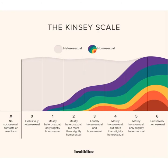The scale fails to demonstrate sexual fluidity and address sexual identities, as a homosexual man can still be sexually attracted to both genders. It also fails to give bisexuality its own orientation. The X stands for No Social Sexual Contacts or Relations, and Kinsey failed to properly address asexuality on the scale.